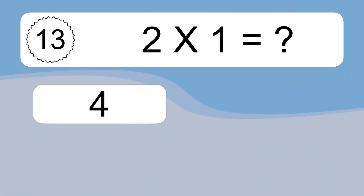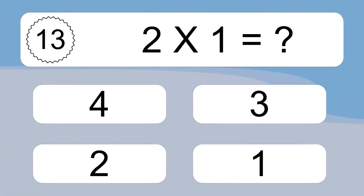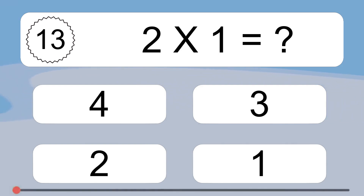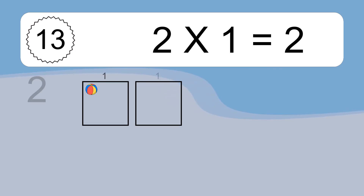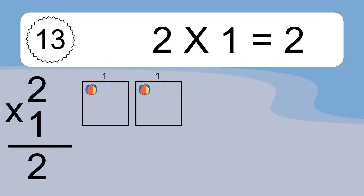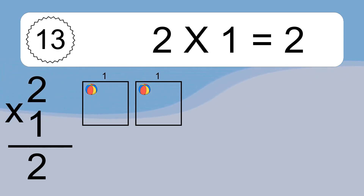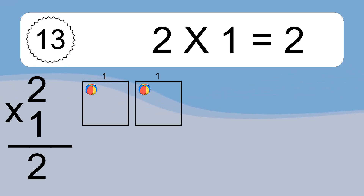2 times 1 equals what? 2 times 1 equals 2. We have 2 boxes and each box has 1 colorful ball inside. If you count all the balls in all the boxes together, you will have 2 times 1 balls. This equals 2 balls.